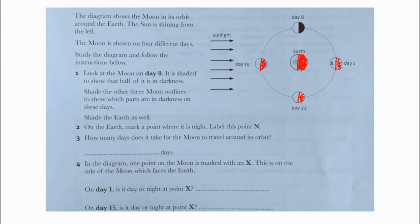Shade the Earth as well. Jadi kita juga disuruh memberi shade kepada bumi juga. On the Earth, mark a point where it is night. I will make this point and write N here. Number one is done.